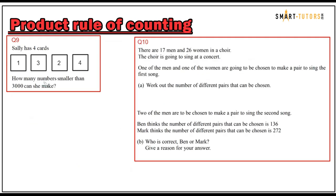Question number nine: Sally has four cards. How many numbers smaller than 3000 can she make? 3000 is a four-digit number, so she needs to form a four-digit number. The first digit has a restriction: less than 3000 means it can be one or two — it cannot be three or four — so only two possible options for the first digit.